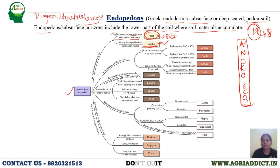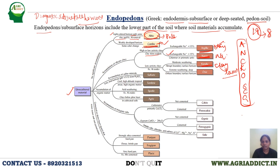If there is accumulation in a subsurface horizon, we have four types: argillic endopedon means clay accumulation; natric means sodium accumulation, where exchangeable sodium is usually greater than 15 percent; kandic endopedon also involves clay accumulation but these are low-activity clays like kaolinite; oxic endopedon involves extreme weathering with a diffuse boundary. Sulfuric horizon results from accumulation of sulfur minerals.